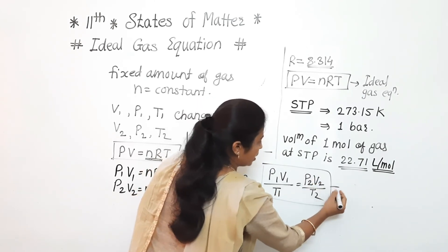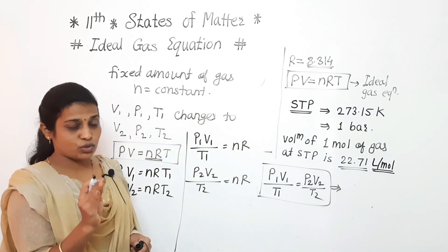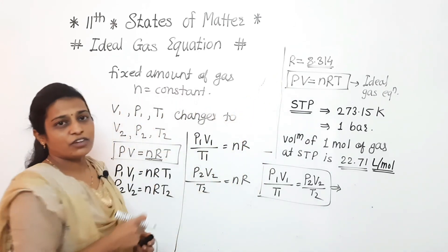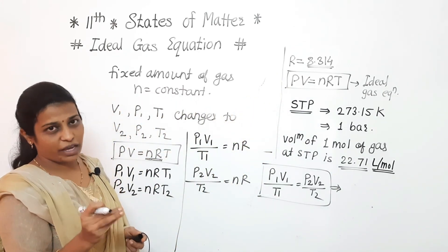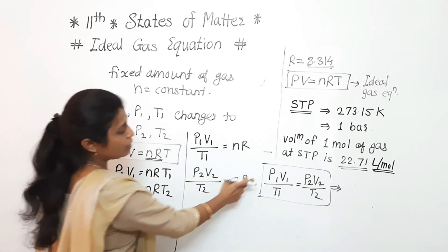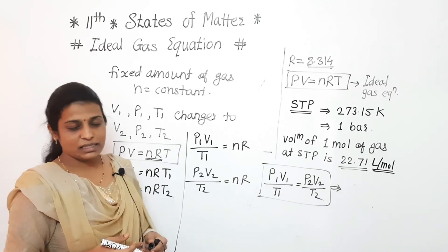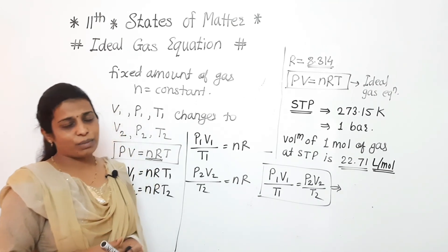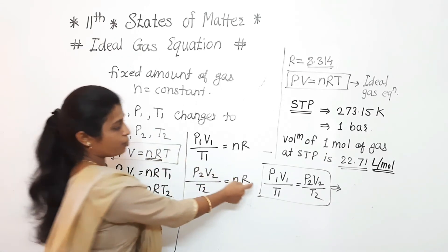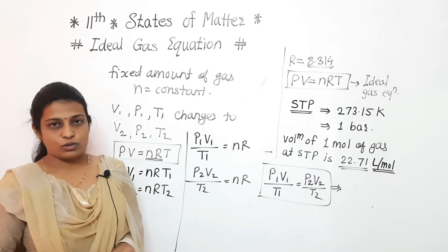From these two equations, we can write: P1V1/T1 = P2V2/T2. This equation is called the combined gas equation. So we have covered the ideal gas equation, how R is derived, and the combined gas equation. We will complete the numerical part also. Thank you.